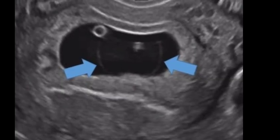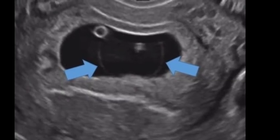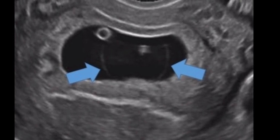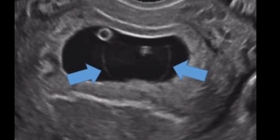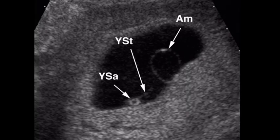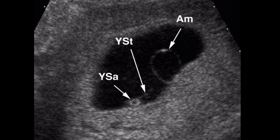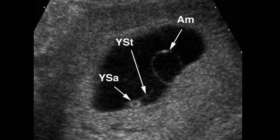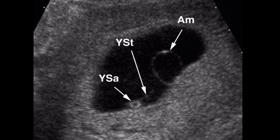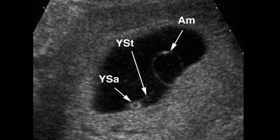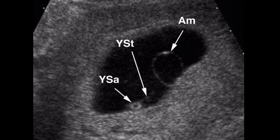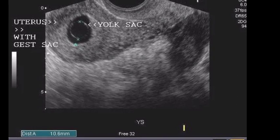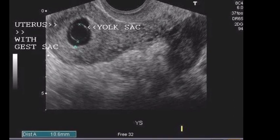14. Embryo present with amnion visible around it but no heartbeat — the expanded amnion sign. 15. Yolk sac that is separated from an embryo when crown rump length is less than or equal to 5 mm — the yolk stalk sign — and/or an enlarged yolk sac greater than 7 mm.